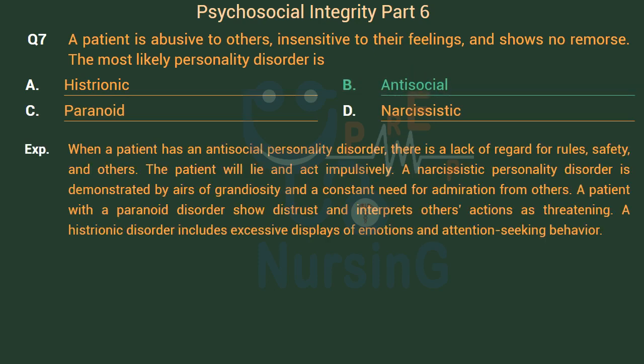When a patient has an antisocial personality disorder, there is a lack of regard for rules, safety, and others. The patient will lie and act impulsively. A narcissistic personality disorder is demonstrated by airs of grandiosity and a constant need for admiration from others. A patient with a paranoid disorder shows distrust and interprets others' actions as threatening. A histrionic disorder includes excessive displays of emotions and attention-seeking behavior.